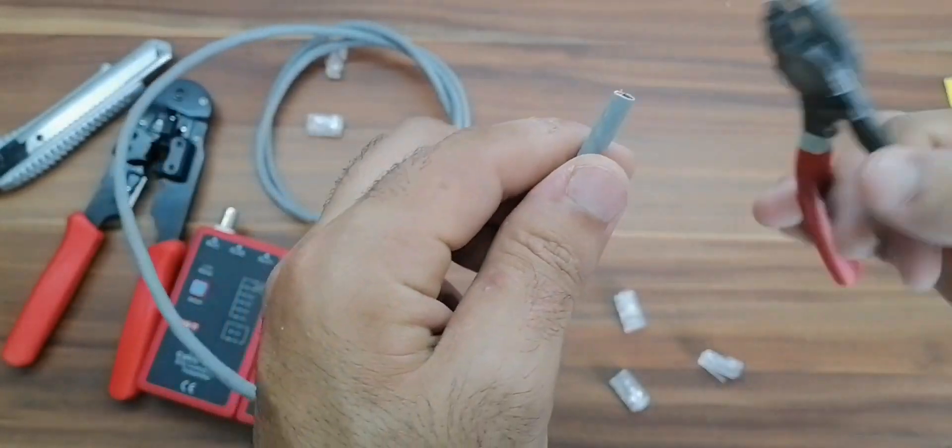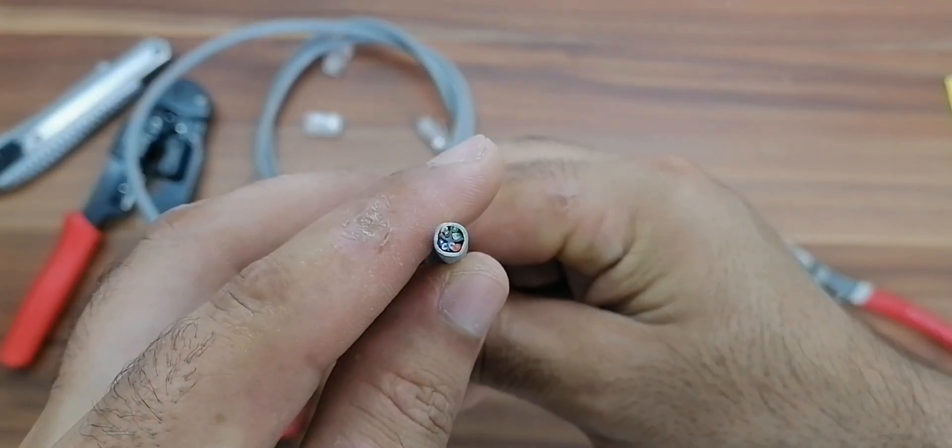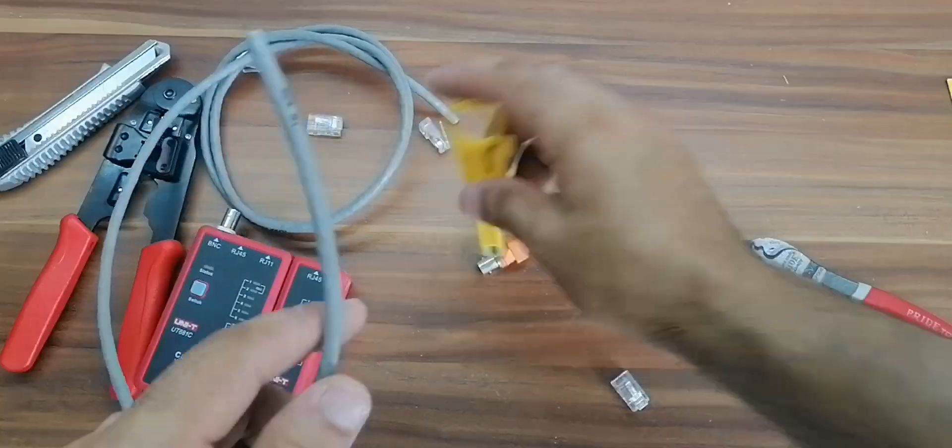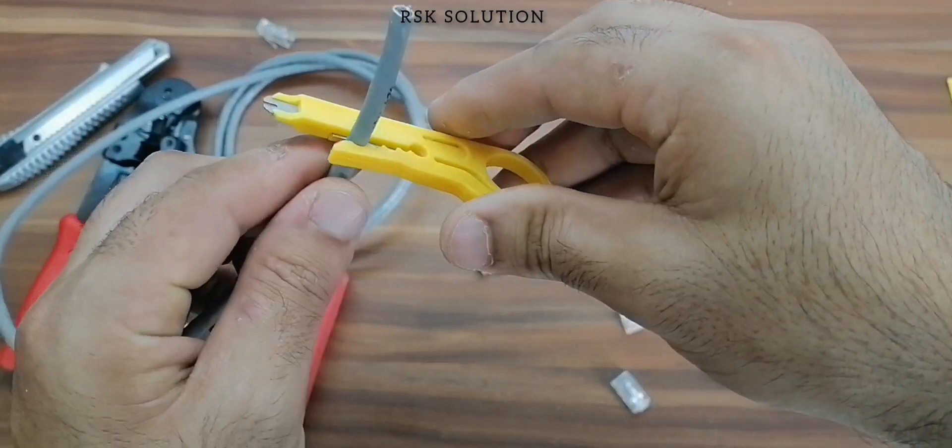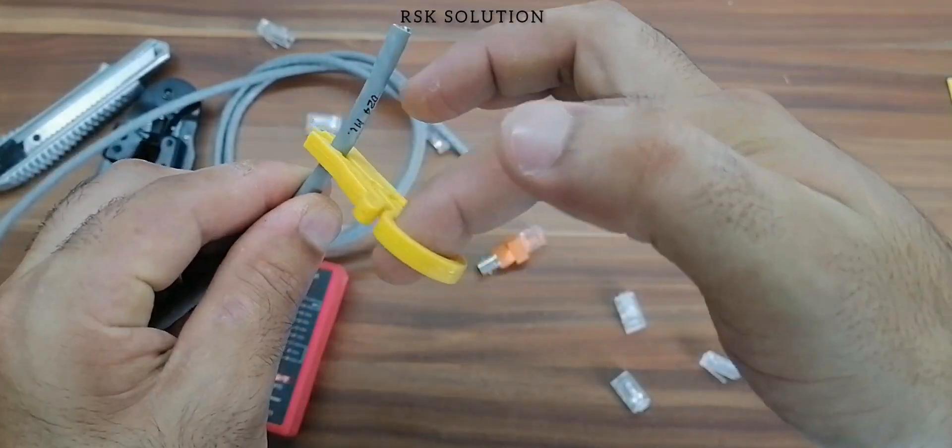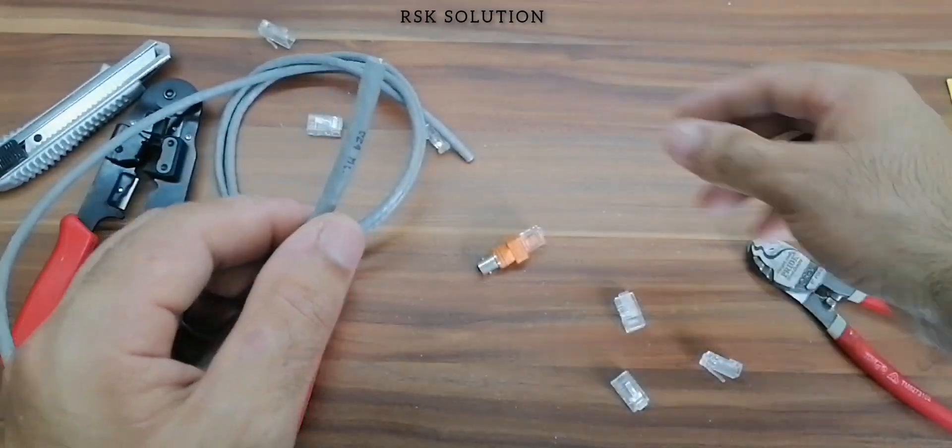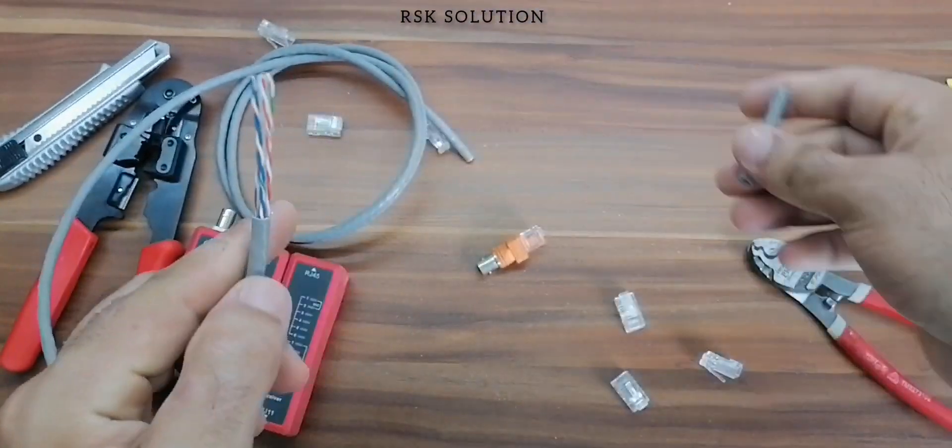First we need a Cat6 cable, we are going to cut this one, as you can see we have Cat6. First we need a wire stripper, you can put it like that and make it round like this. Take it out carefully and pull the outside part.